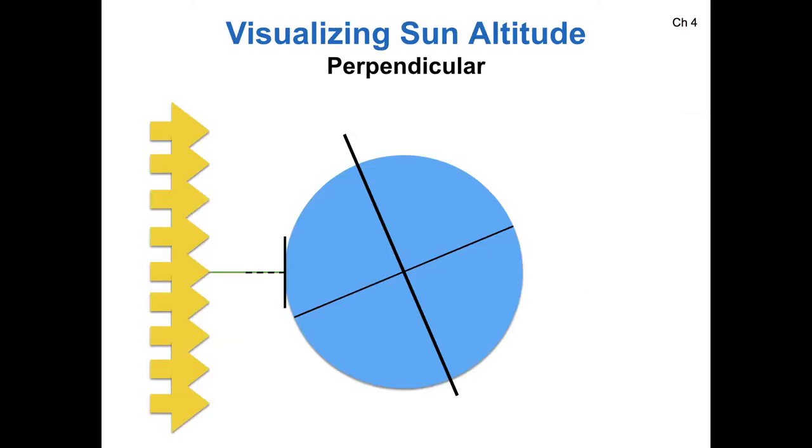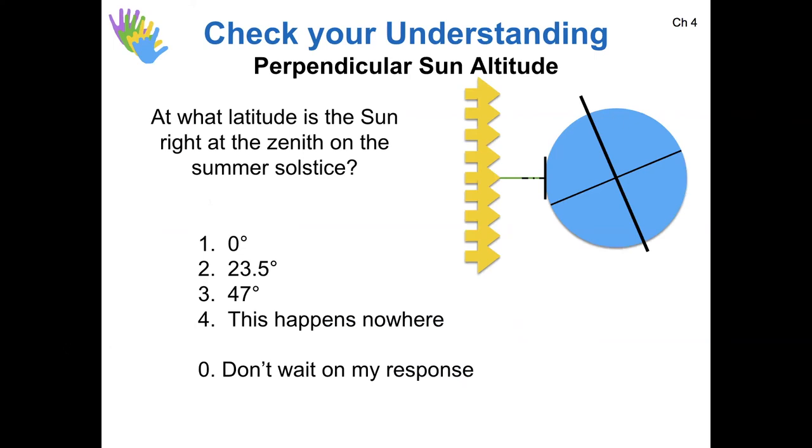At 23 and a half degrees north on summer solstice, the sun is at zenith there. And this is given a special name as a result. This is called the Tropic of Cancer.